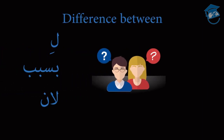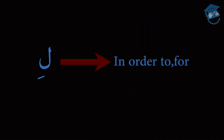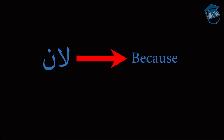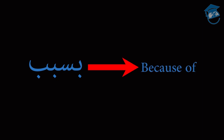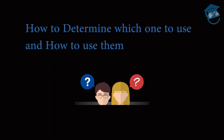So what's the difference between the three choices? Li means in order to or for. Liena means because, and bisabab means because of. Let's find out how to determine which one to use and how to use them.